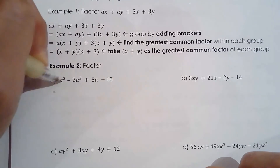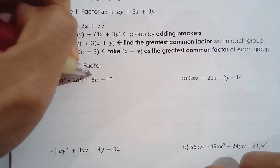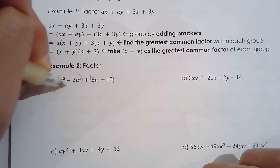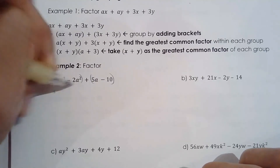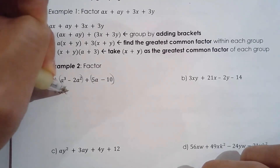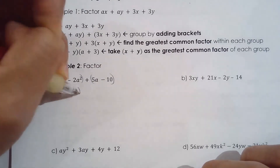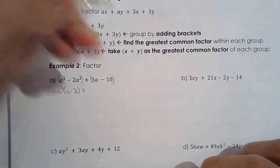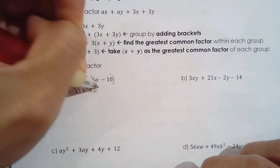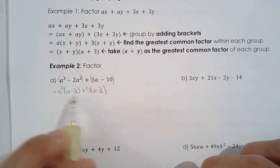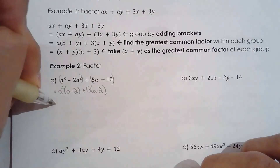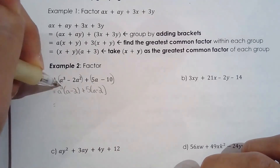I'm going to group the first two terms together and the last two terms together. The greatest common factor for the first grouping is a squared, and the greatest common factor for the second grouping is 5.